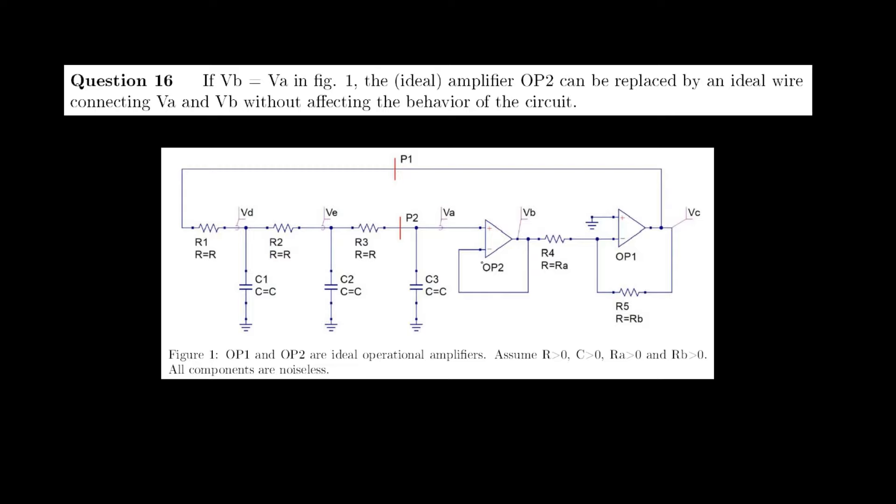If we were to remove OP2 and directly connect VA and VB, then the inverting amplifier and its resistors that configure it would actually load on the frequency-dependent network and vice versa.